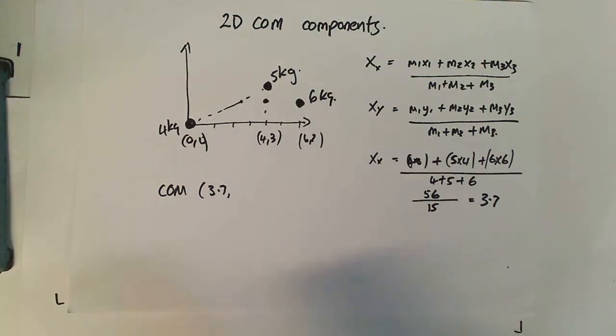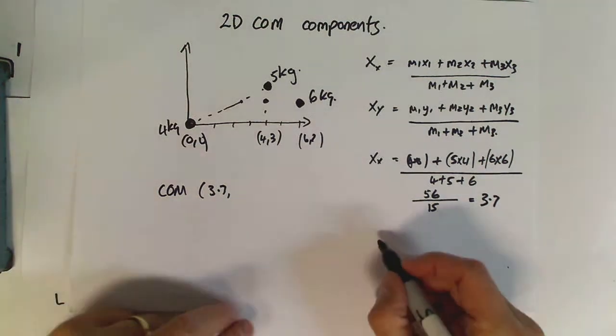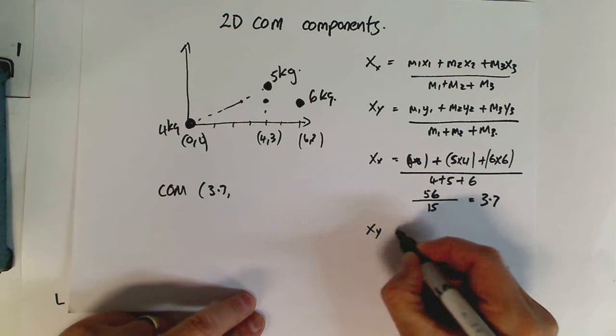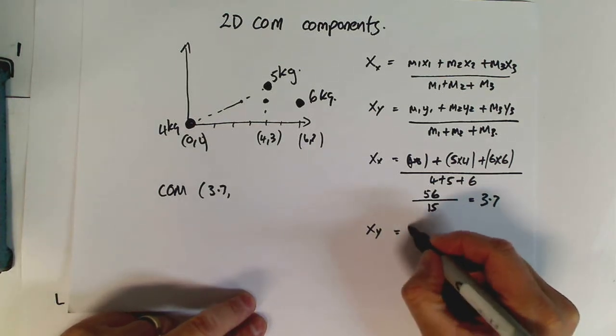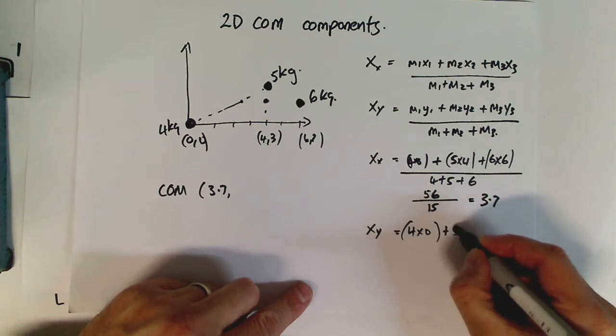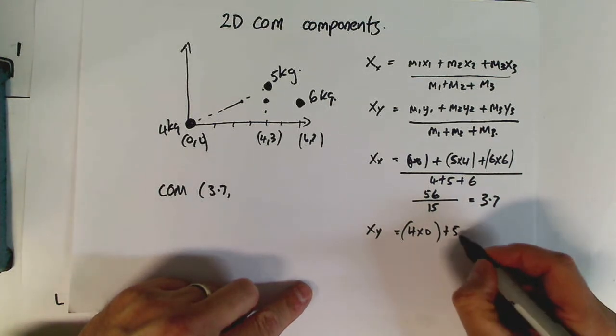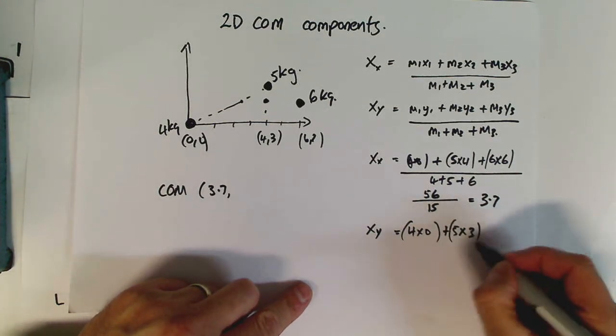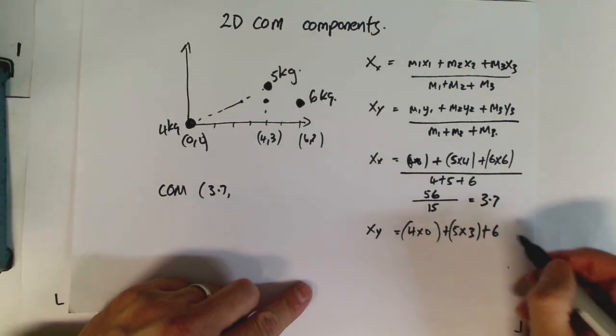Now, we just need to find our y component. So, let's plug the numbers in. We've got m1, 4, times 0, plus 5, times the y component, which is 3, plus 6, times the y component, which is 2.